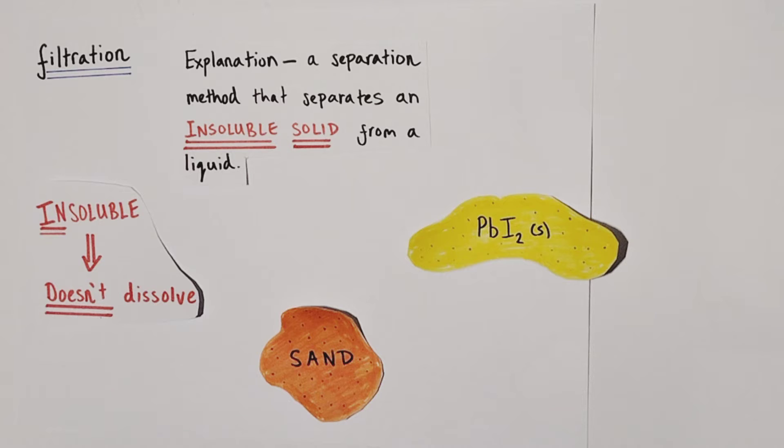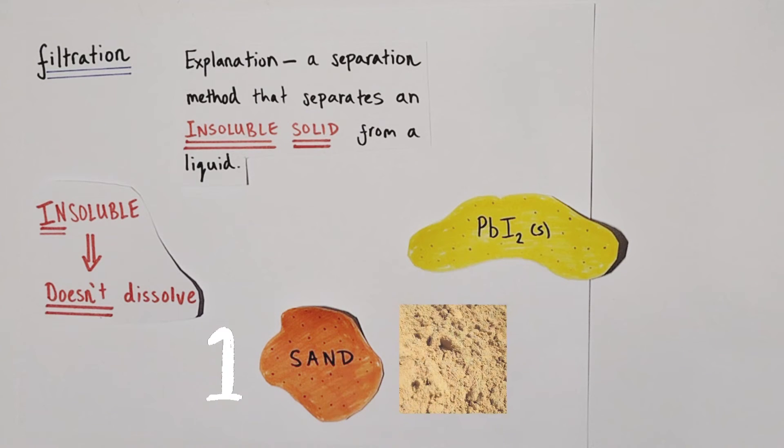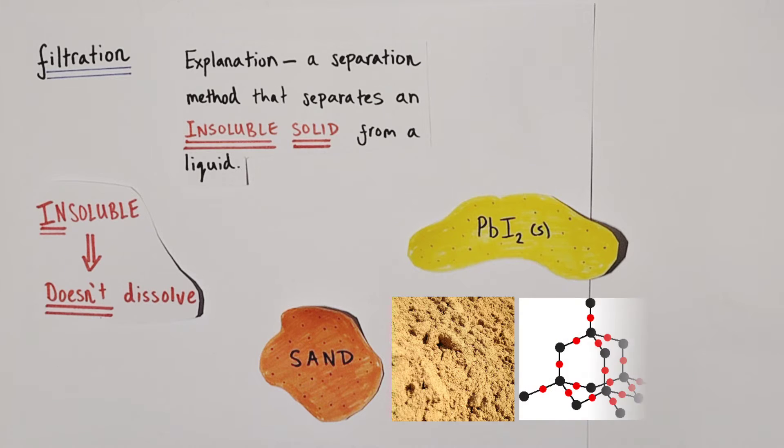So a couple of good examples of some commonly found insoluble substances. Number one, sand, mainly comprised of silicon dioxide, a giant covalent structure, and silicon dioxide is insoluble in water.